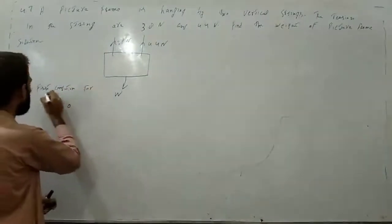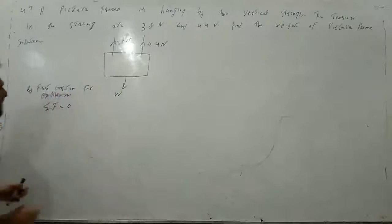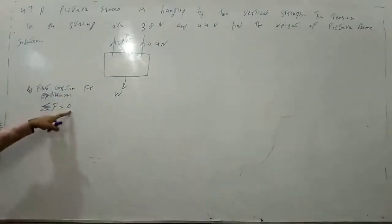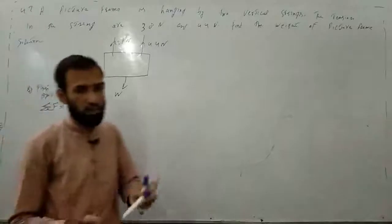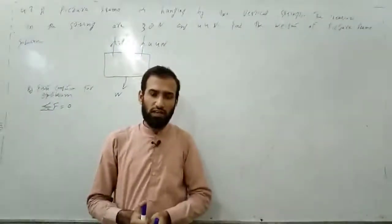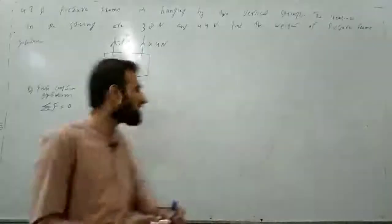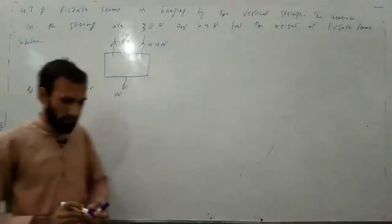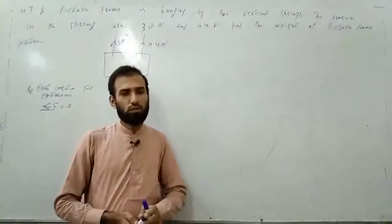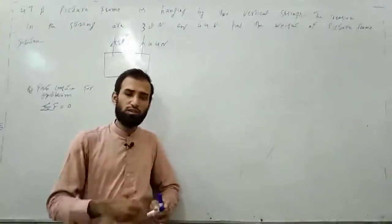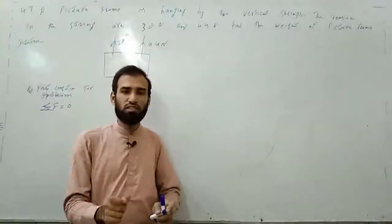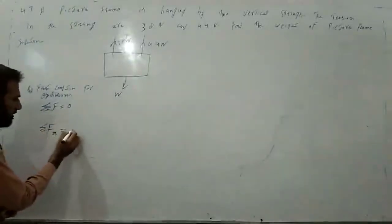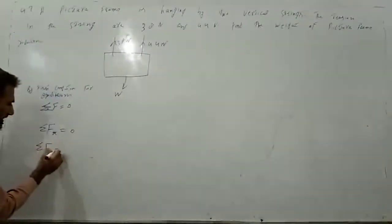According to the first condition for equilibrium, sigma F is equal to zero. If a body is at rest, it satisfies the first condition of equilibrium, meaning sum of forces is equal to zero. When sigma F equals zero, the forces applied horizontally have a sum of zero, and forces applied vertically also have a sum of zero. So sigma Fx equals zero and sigma Fy equals zero.